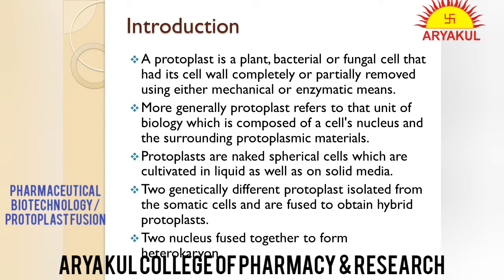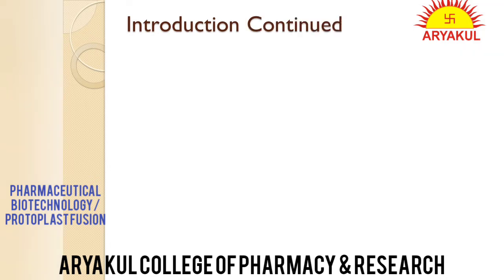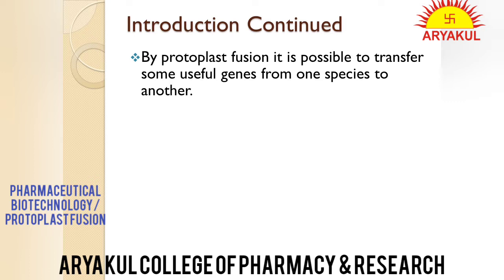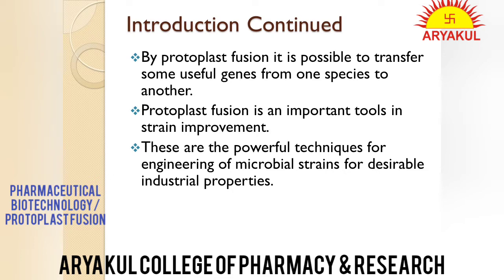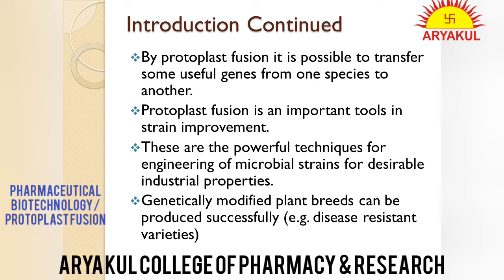What is the need of fusion? Basically, we use protoplast fusion to develop genetically modified plants. Ek species se doosari species mein genetic material ko transfer karna hota hai. The reason is that plants get diseases — disease resistant strains ki zaroorat hai. We fuse a good variety from an outside source with a normal variety, and the new hybrid we get is disease resistant. This is a very important technique with many industrial applications — genetically modified breeds aaj kal market mein aa rahi hain, production badh gaya hai, size badh gaya hai — be it fruits or vegetables. These are the various applications of protoplast fusion.